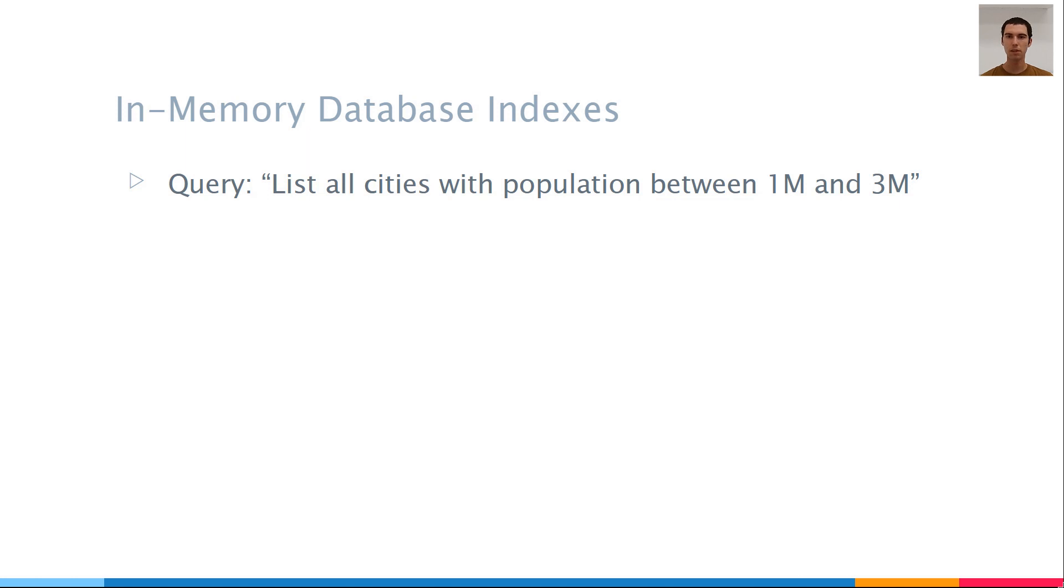Suppose that you have a database of cities, and you run a query to list all cities with a population between 1 and 3 million. Running such a query without scanning all the data requires an ordered index of the city populations.